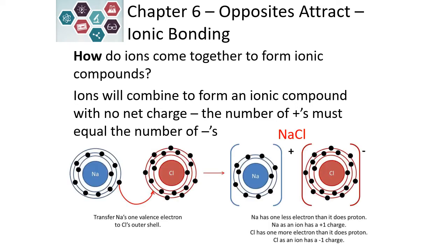For our example with sodium and chloride, sodium becomes a positive one because it loses an electron. Chlorine becomes a negative one because it gains the electron from the sodium. Because there is a plus one charge on the sodium and a minus one charge on the chlorine, overall the charge is going to be zero, which forms our sodium chloride.